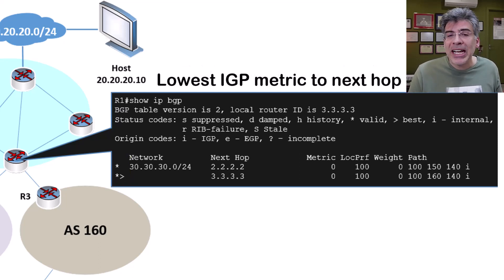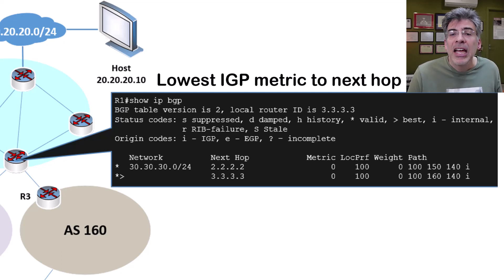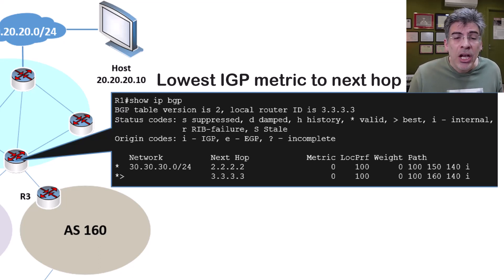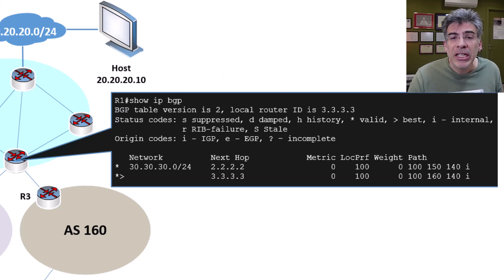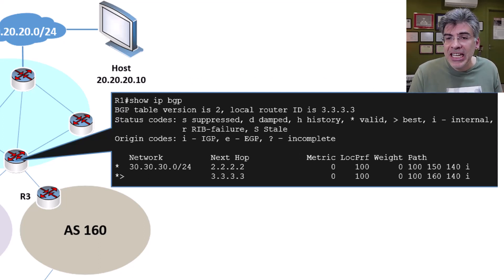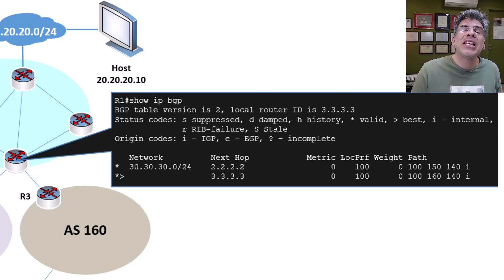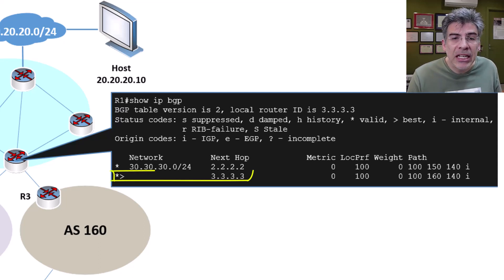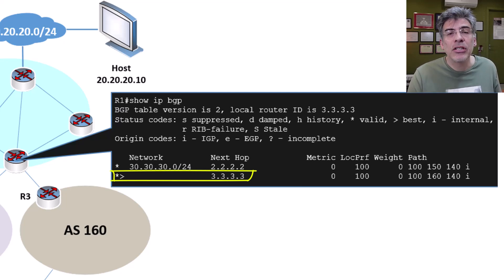The lowest IGP metric also has no meaning here because there is no IGP being used between EBGP peers. So the very next attribute is the oldest path. There is no indication in the BGP table which route is actually older — that's information that's maintained internally by the router. In our case, the path via R3 was learned first, so for this reason, this path is chosen.